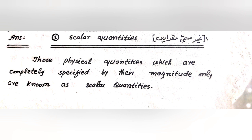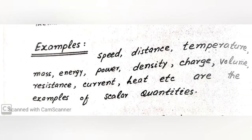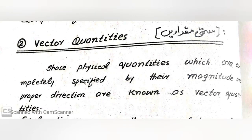Scalar quantities: those physical quantities which are completely specified by the magnitude only are known as scalar quantities. Examples: speed, distance, temperature, mass, energy, power, density, charge, resistance, current, and heat.